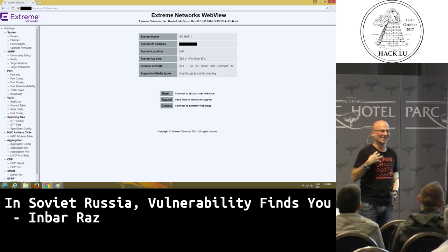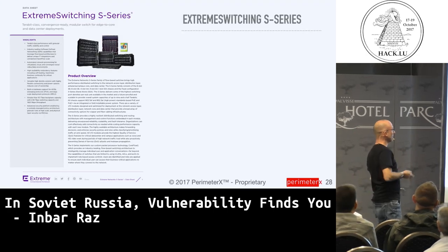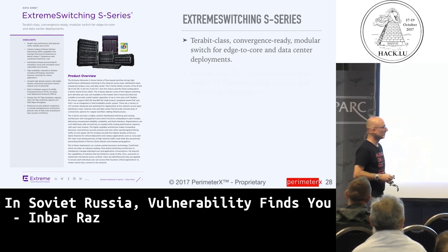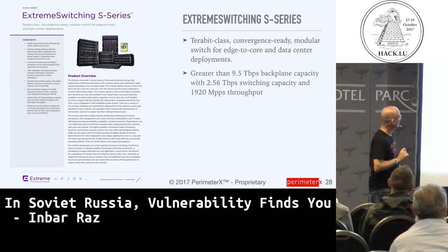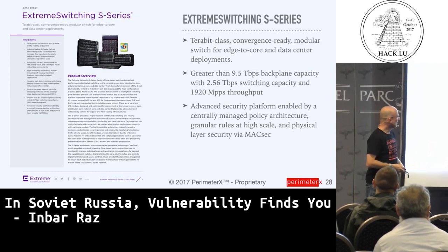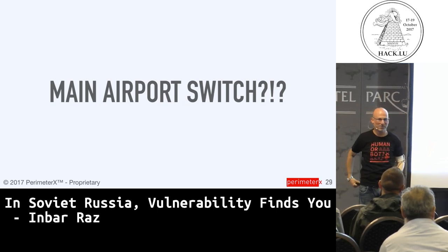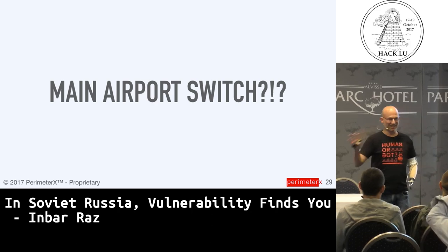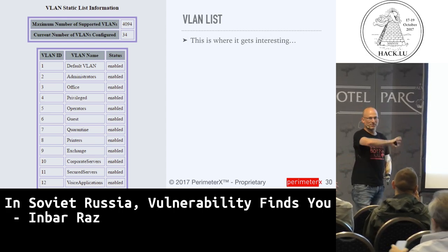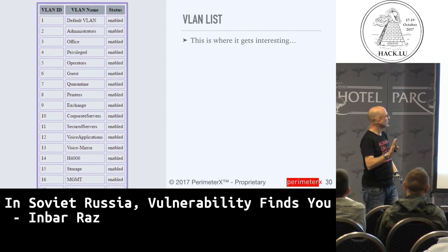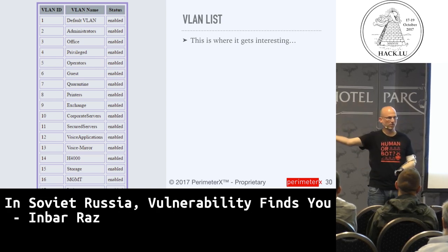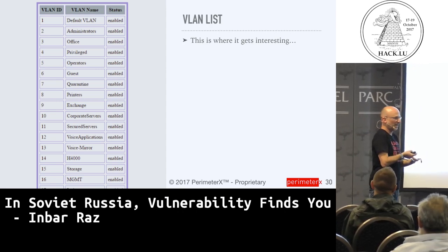I don't know what this is, but I can tell you this is not an ADSL modem. What is it? Terabit class convergence-ready modular switch for edge-to-core and data center deployments — greater than 9.5 terabits per second. And of course, advanced security platform. You guessed it: this is the main switch of the entire airport. And this is really bad. I start looking around. I am on the internet computer open to the outside world, connected to the main switch of the airport using an admin account with no password.